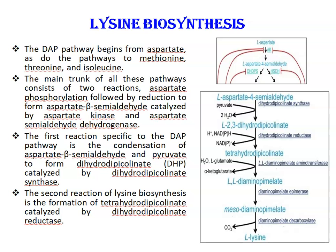Next is lysine biosynthesis. In plants, lysine biosynthesis is known to occur via a pathway that utilizes diaminopimelate, DAP, as an intermediate. The DAP pathway begins from aspartate, as do the pathways to methionine, threonine, and isoleucine. The main trunk of all these pathways consists of two reactions: aspartate phosphorylation followed by a reduction to form aspartate beta-semi-aldehyde, catalyzed by enzymes aspartate kinase and aspartate semi-aldehyde dehydrogenase.